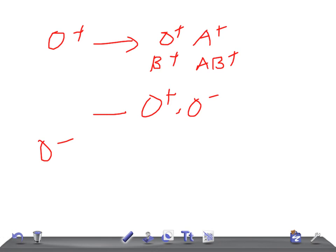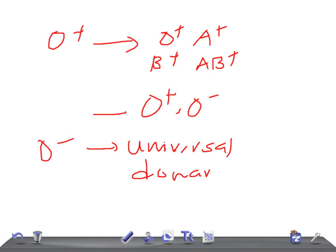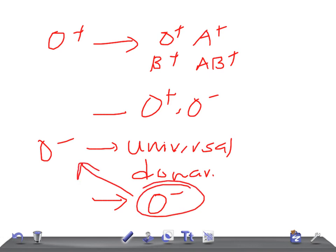If the patient is O negative, then they can donate to anyone — any type of blood group. That's why they are known as the universal donor. And O negative people can receive blood from only O negative. So guys, this is a brief discussion. Thank you so much for watching this video. Take care. Bye.